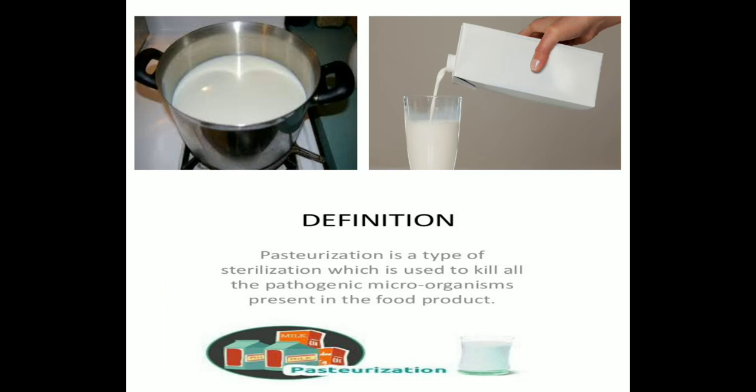Next is the method of heat and cold treatment. You must have observed that milk at home is boiled before storage to kill the microorganisms. Similarly, we keep our food in refrigerators at low temperature to inhibit the growth of microbes. The milk that comes in packets does not get spoiled because it is pasteurized.